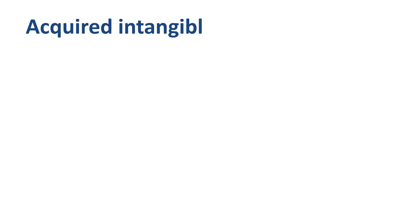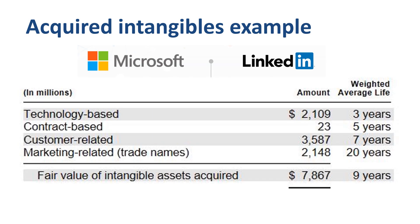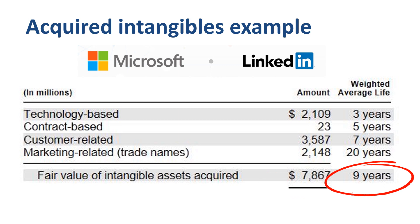Intangible assets can be either acquired or internally created. An example of acquired intangibles is the acquisition of LinkedIn by Microsoft. In the valuation of the acquisition and subsequent consolidation of the accounts in Microsoft's books, the intangible assets of LinkedIn were valued at $7.9 billion. On average, these intangible assets were deemed to have a useful economic life of 9 years.